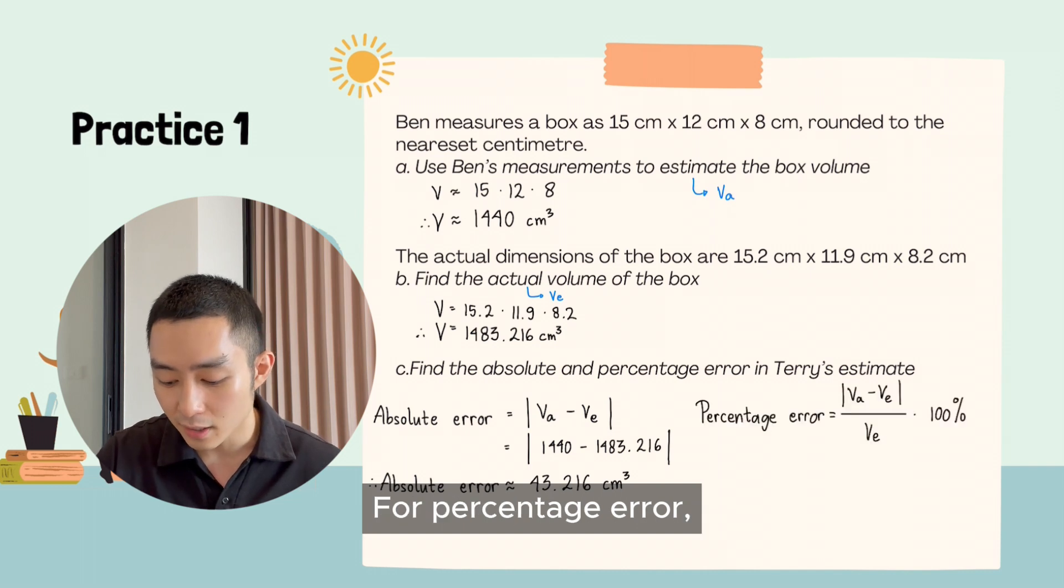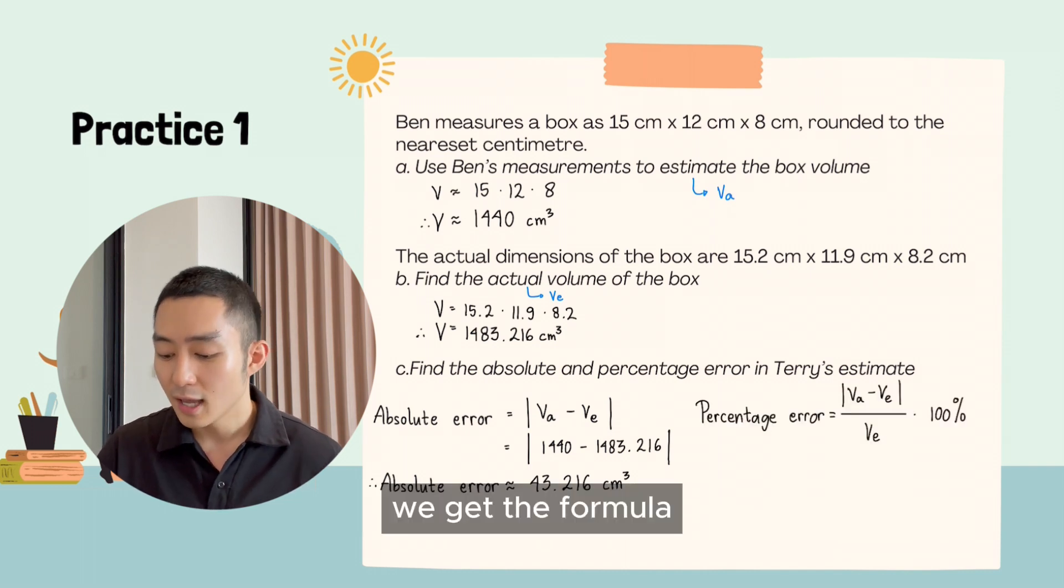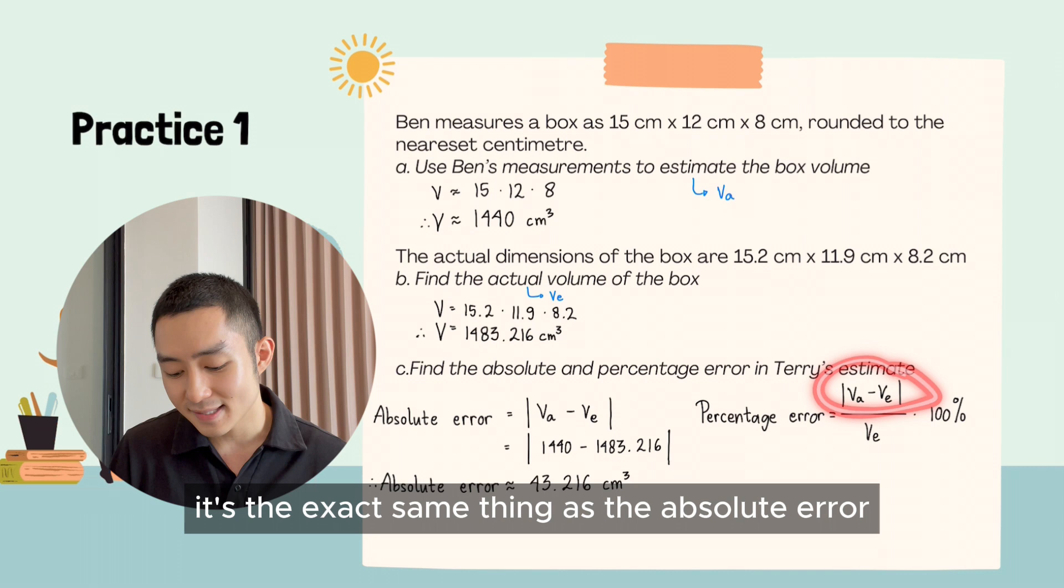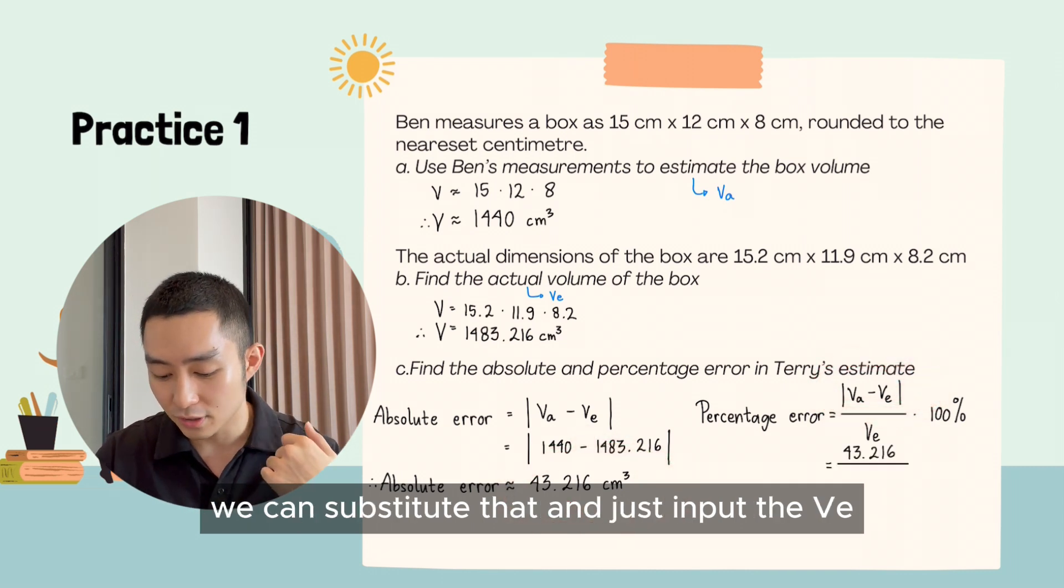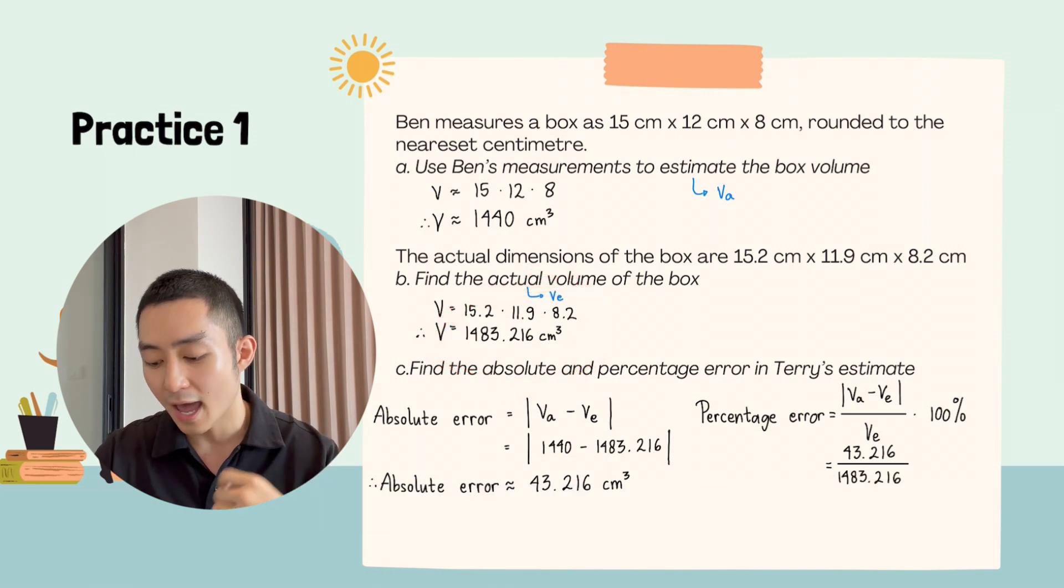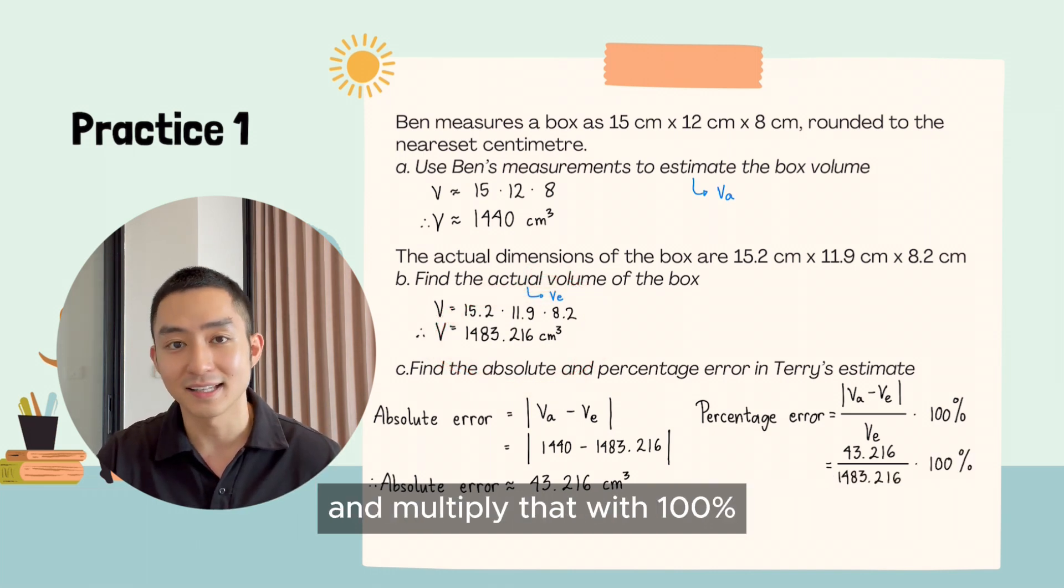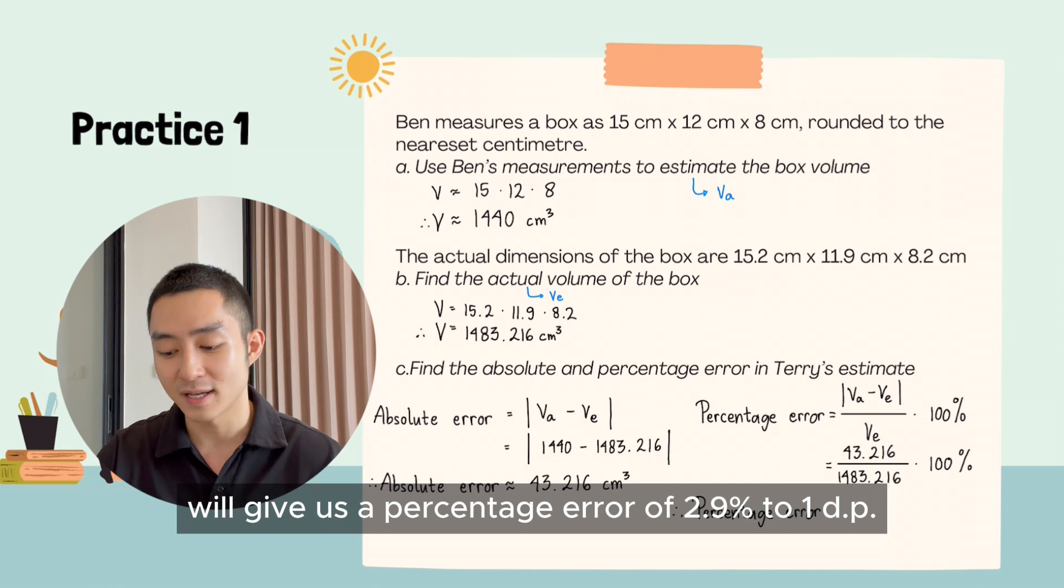For percentage error, we get the formula and for the upper part, it's the exact same thing as the absolute error. We can substitute that and just input the VE down below and multiply that with 100%. Calculating with GDC will give us a percentage error of 2.9% to 1 decimal place.